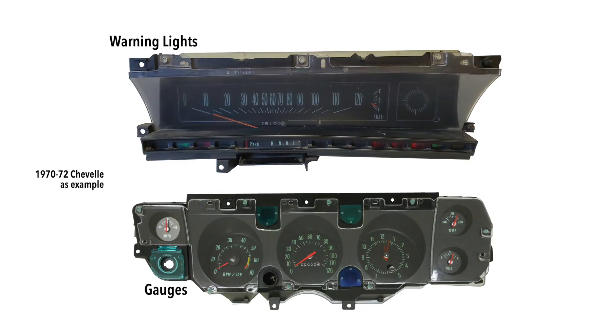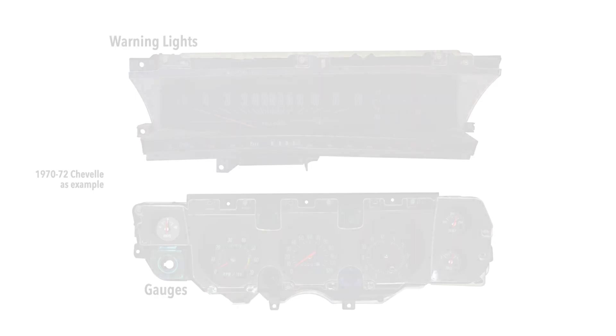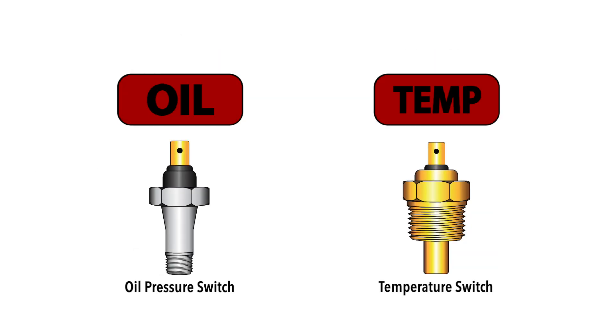The swap from a warning light to gauge instrument cluster is one of the more popular tweaks to make. Along with a wiring project, warning light sending units can be used for either pressure or temperature and are similar to an on-off switch.